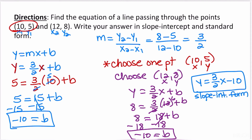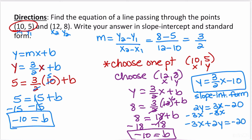To convert to standard form, first eliminate the fraction by multiplying the entire equation by 2, giving 2y equals 3x minus 20. Moving 3x to the left gives negative 3x plus 2y equals negative 20. Since x is negative, divide the entire equation by negative 1 to flip all signs. The final answer in standard form is 3x minus 2y equals 20.